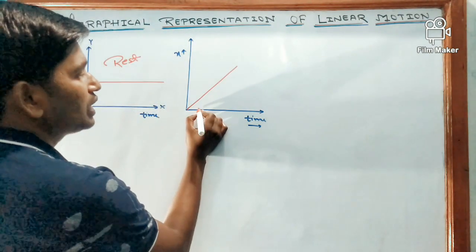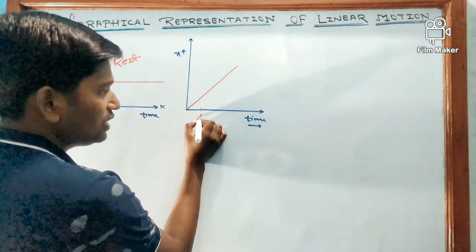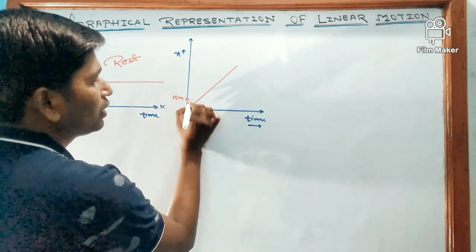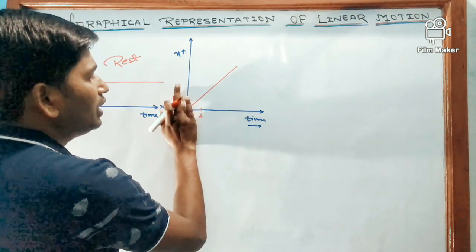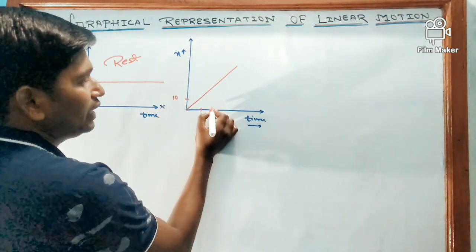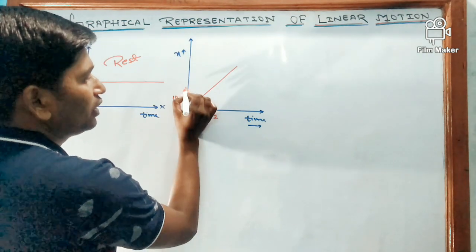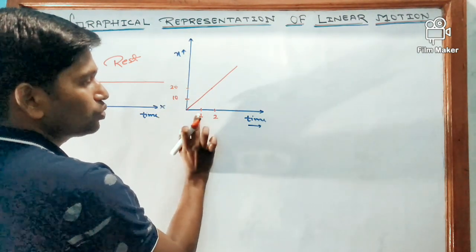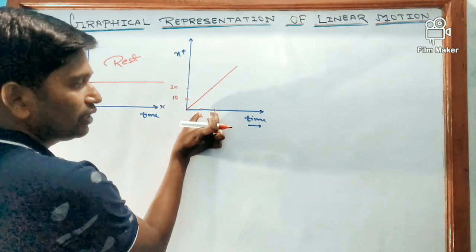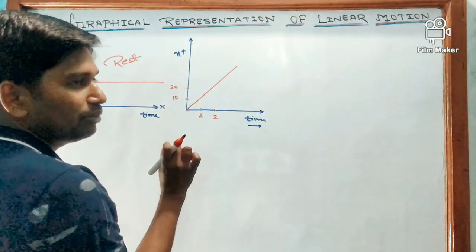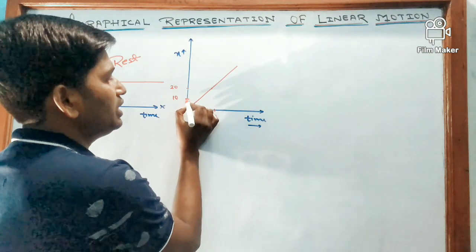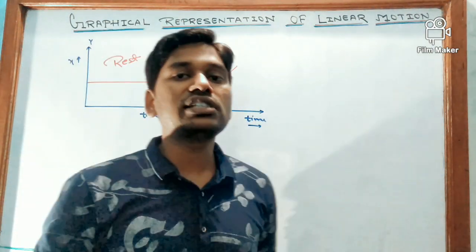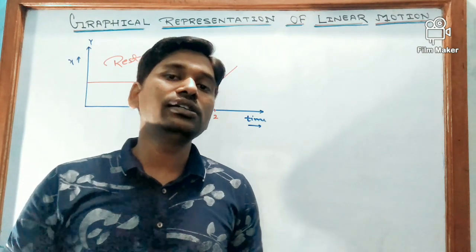For example, suppose at one second the body travels a distance of 10 meters. Similarly, in two seconds the body reaches 20 meters — so in each one-second interval, the body covers 10 meters. Equal displacement in equal intervals of time: this type of graph represents uniform velocity.